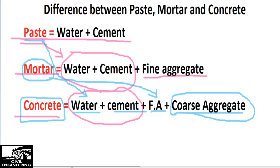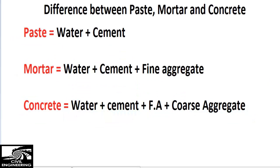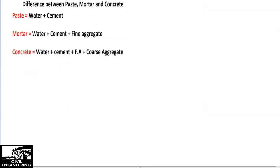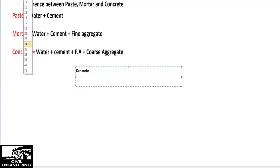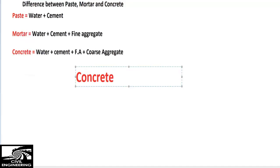Many students don't know about this basic differentiation between these three main materials. I'm also going to show you the composition of concrete — how much of each specific material is present. Concrete has four different components and I will show you the percentage by volume for each one.